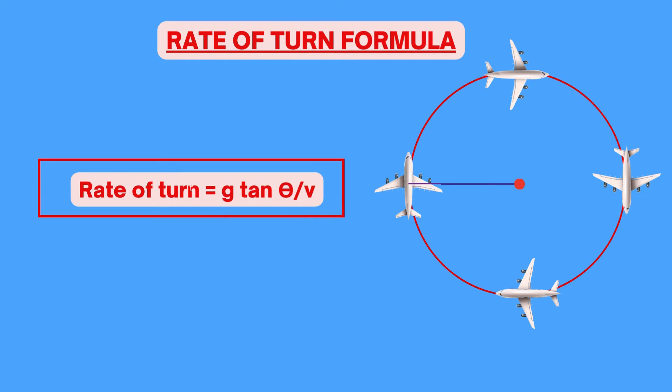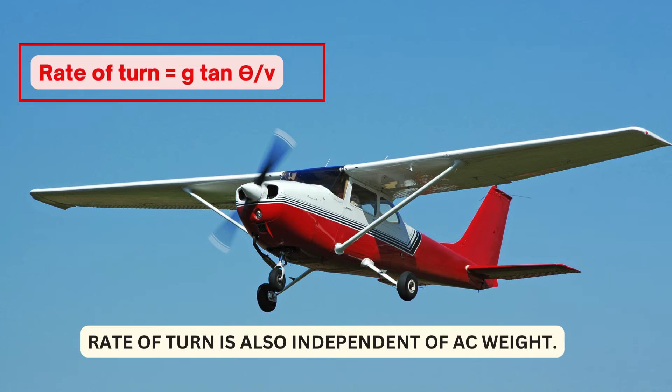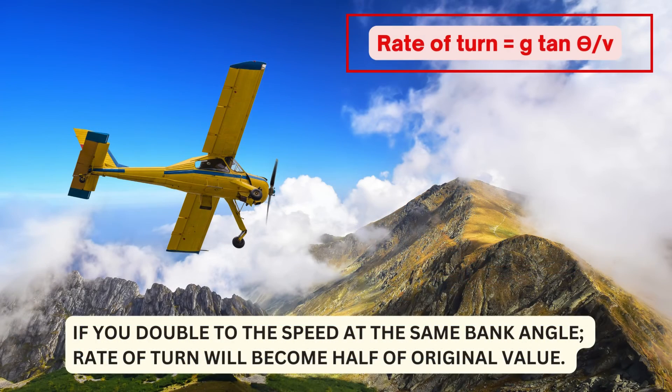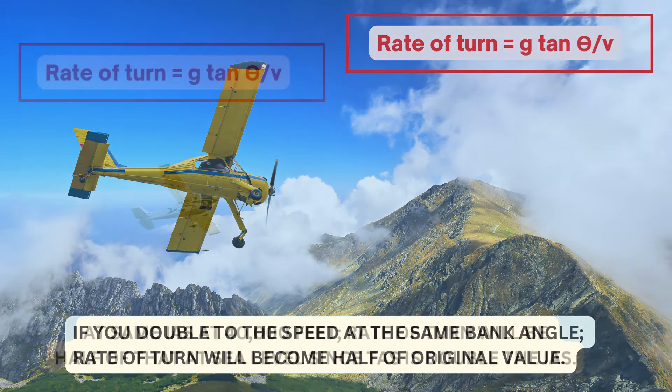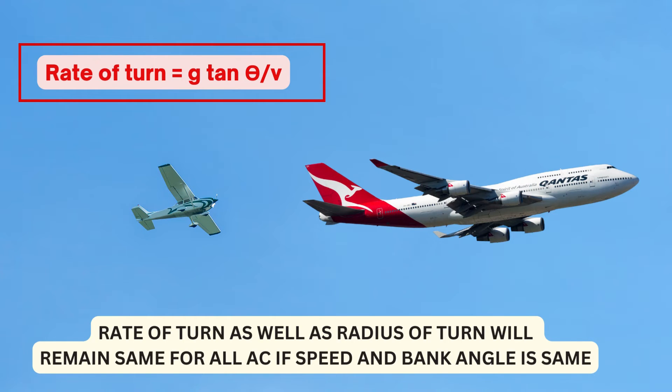So analysis of rate of turn formula reveals that the rate of turn depends on speed, which is TAS and angle of bank. Lower the speed and higher the bank, higher is the rate of turn. Rate of turn is also independent of aircraft weight. If you double the speed at the same bank angle, the rate of turn will become half of original value. At the same indicated airspeed at 40,000 feet, the rate of turn will be half of that at sea level since the TAS is double of indicated airspeed. Rate of turn as well as the radius of turn will remain same for all aeroplanes if the speed and bank angle is same.